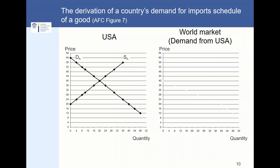The U.S. is the importing country, Mexico is the exporting country, and we assume that the countries are large. In the left part of this slide, you can see the market in the U.S. — the downward sloping demand curve of the home country and the upward sloping supply curve. When the price is equal to 40, demand equals supply, so the demand from the U.S. in the world markets will be equal to zero.